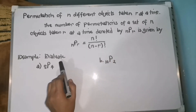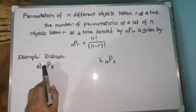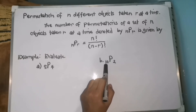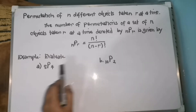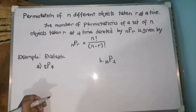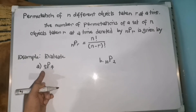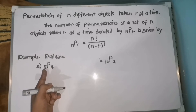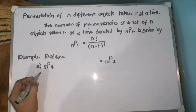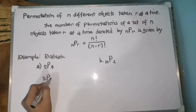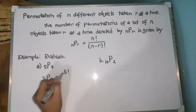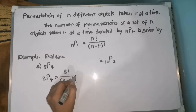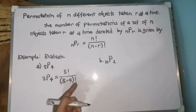Let's have an example. We will evaluate the permutation of 8 different objects taken 4 at a time. Substituting into the formula, our N is 8 and our R is 4. So, 8P4 equals 8 factorial over the quantity of 8 minus 4 factorial, which is 8 factorial over 4 factorial.